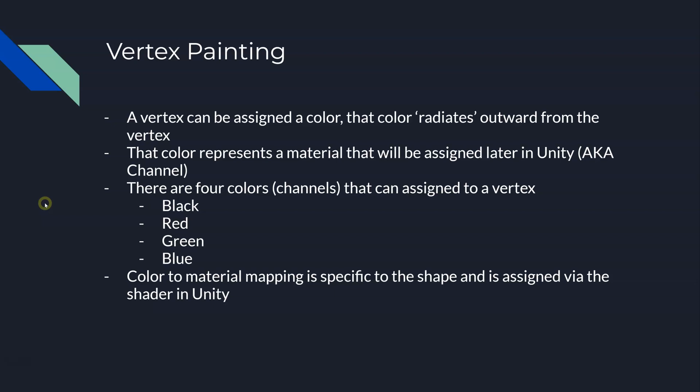Now that you understand the basics of 3D modeling — what a point is, what an edge is, what a plane or triangle is — let's talk about vertex painting. In vertex painting, we essentially assign or paint a vertex. You might be thinking: how do you paint a point in space? When you paint it, the color radiates outward from that vertex, fading as it goes outward. The planes and triangles that vertex helps define no longer have to be completely filled with the same material.